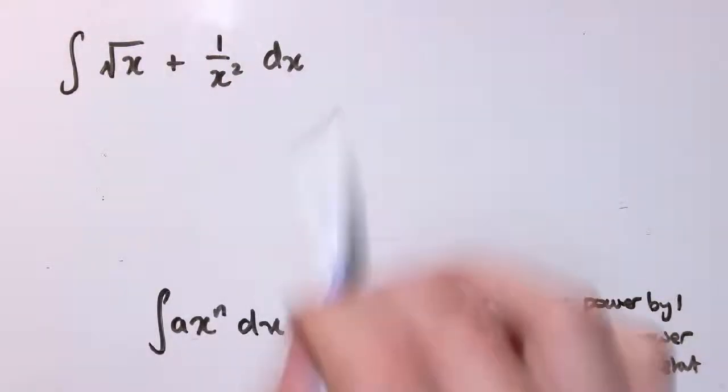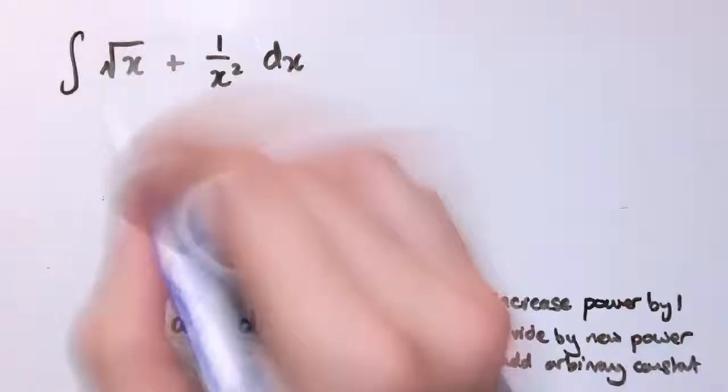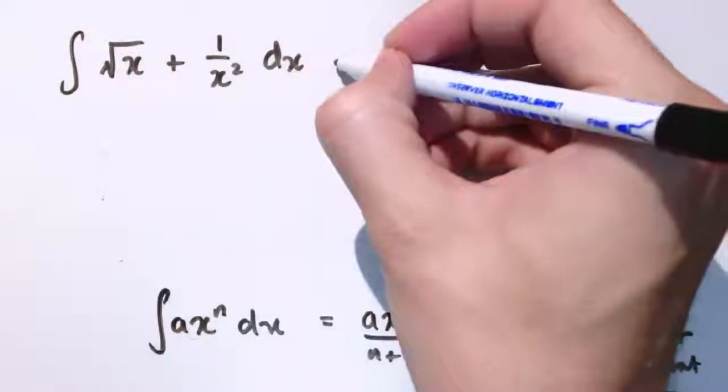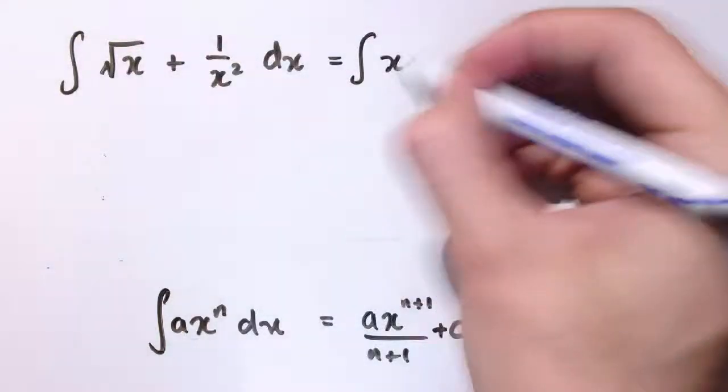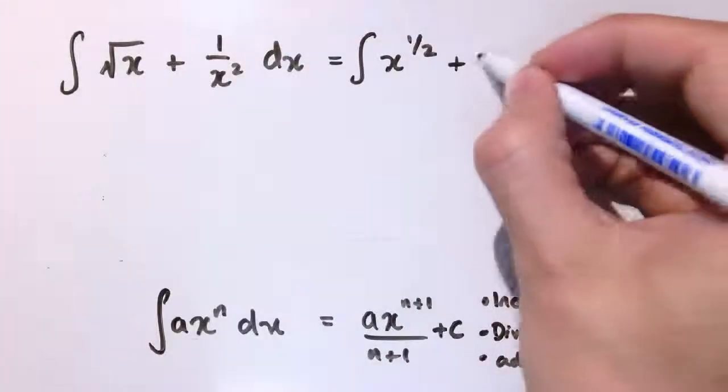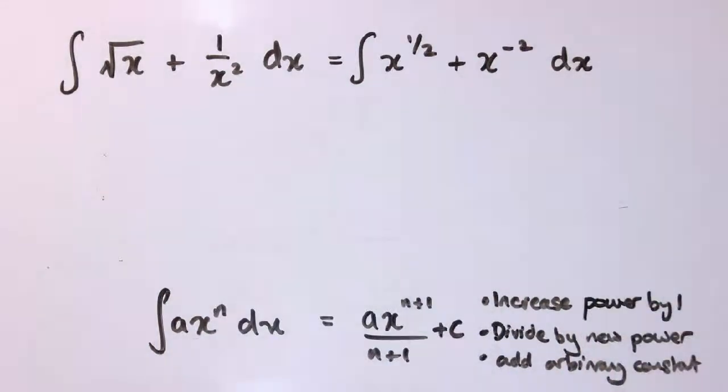Time for a harder one then. We've got the integral of root x plus 1 over x squared dx, and hopefully not too much of a surprise what we're going to do here. When we differentiated these, we first needed to turn them into index form, and we're going to have to do exactly the same here. So this is equal to the integral of x to the 1 half, because that's what root x is, and 1 over x squared is x to the minus 2.